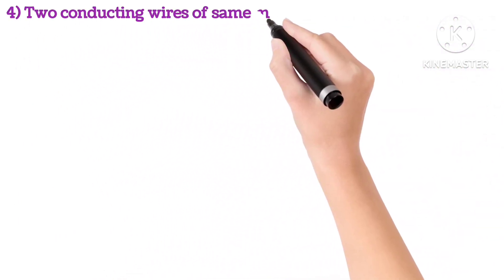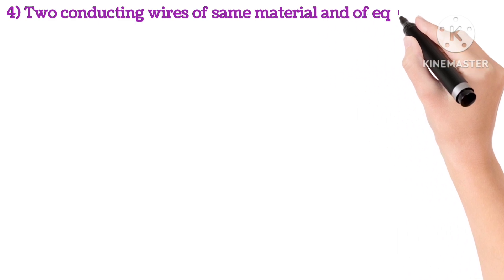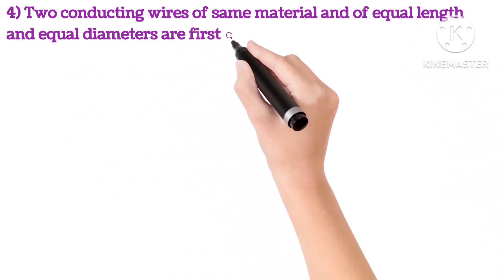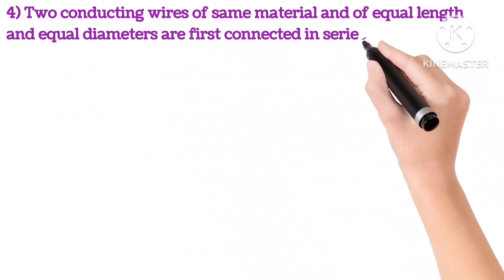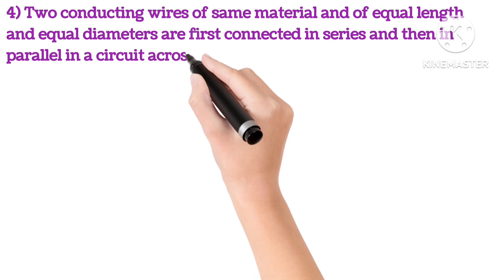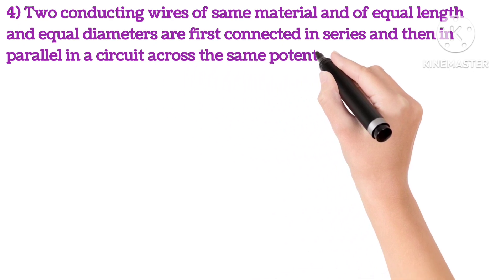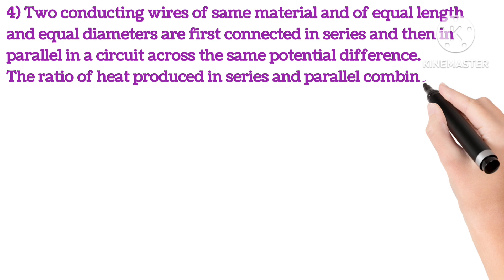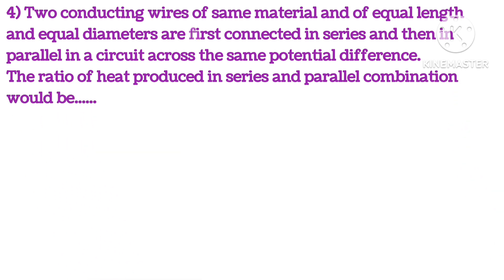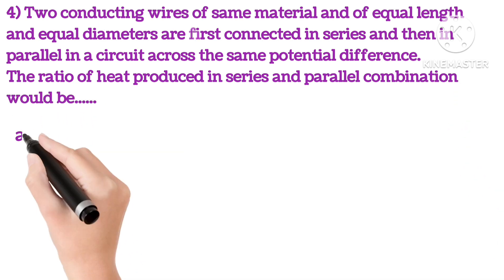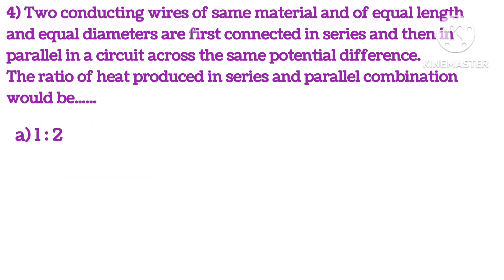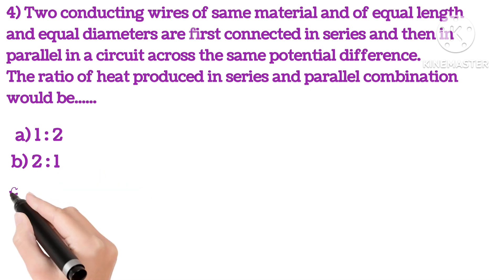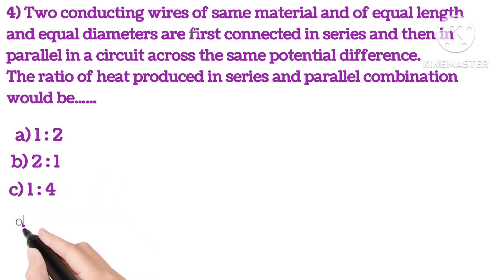Fourth: two conducting wires of same material and of equal length and equal diameters are first connected in series and then in parallel in a circuit across the same potential difference. The ratio of heat produced in series and parallel combination would be 1 is to 2, 2 is to 1, 1 is to 4 or 4 is to 1.